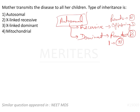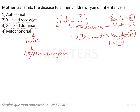Now we will come to X-linked recessive and X-linked dominant — these are the two rules. For X-linked dominant, the father transmits the disease to almost all the daughters. Similarly, in X-linked recessive disease, the mother transmits the disease to most of the sons.